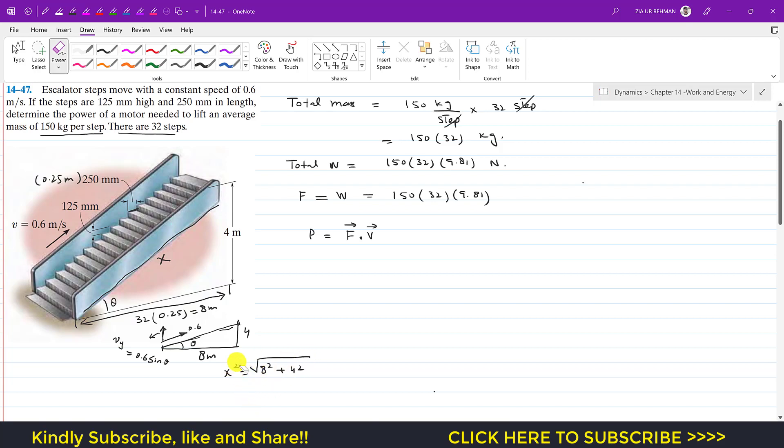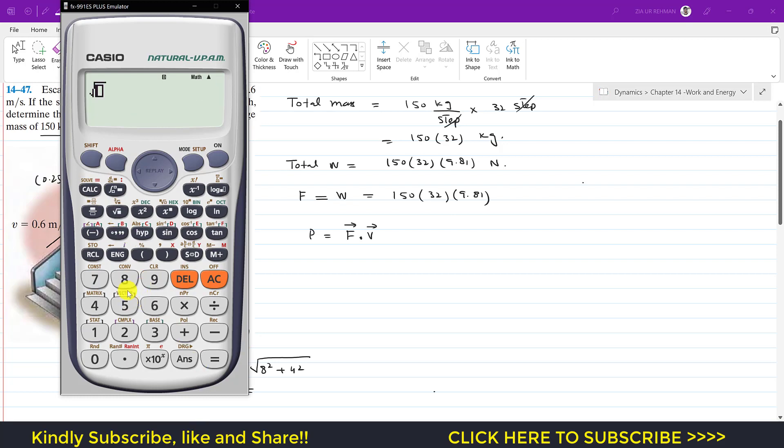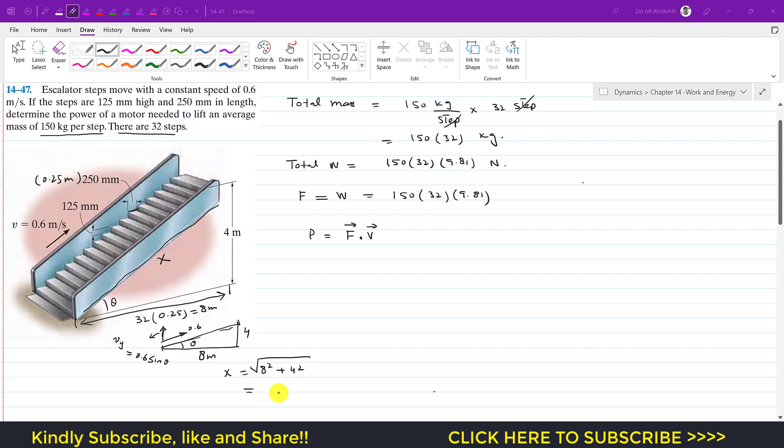That would give us the hypotenuse and that is 8 squared plus 4 squared, so this is 4 square root 5. So now the hypotenuse of this triangle is 4 square root 5.